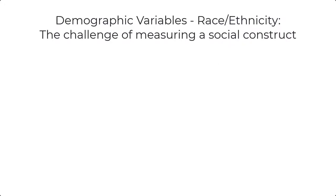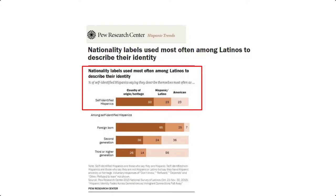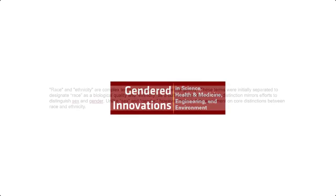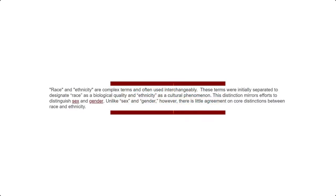It should be noted that race and ethnicity as social constructs in no way diminishes their power and influence in the social world. But for our conversation about measurement of human demographics, it can be quite challenging to determine the one correct way to measure race and ethnicity, especially since they are almost universally measured by having individuals fill out survey questions. As noted by Professor Jennifer DeVere Brody of Stanford, race and ethnicity are often substituted for one another. The Stanford Gendered Innovations website notes these terms were initially separated to designate race as a biological quality and ethnicity as a cultural phenomenon — unlike sex and gender, there is little agreement on core distinctions between race and ethnicity.